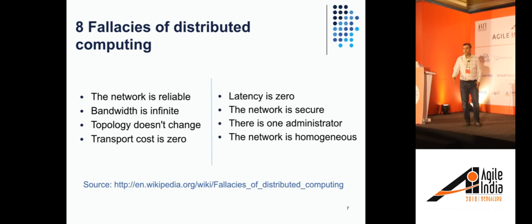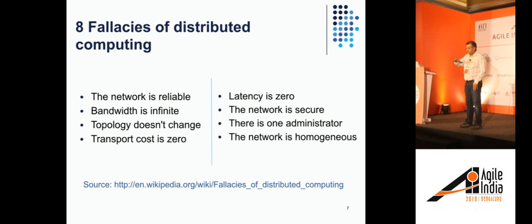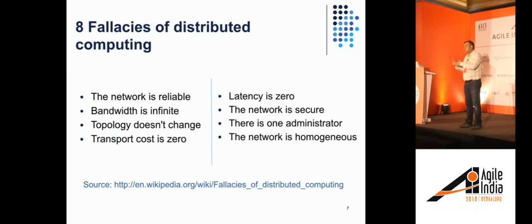There are common fallacies of distributed computing. We tend to assume we have a reliable network, bandwidth, etc. If you go to that website, they list eight fallacies of distributed computing. The common point is: never assume your environment works perfectly, because it does not. What you need to do is factor in what to do if things fail — understand how your system would behave in case of failure and build resiliency into the system itself.